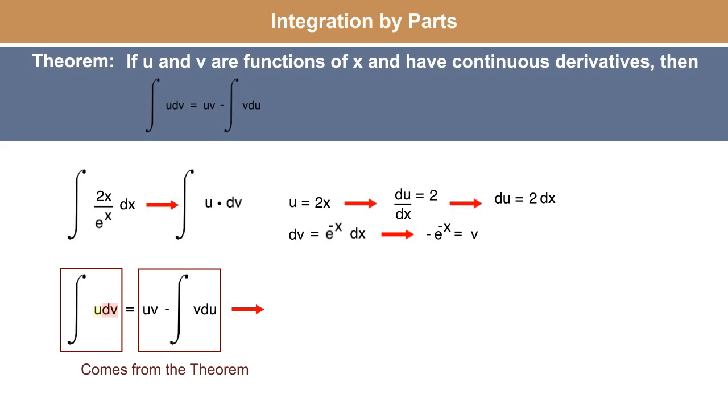We already know what u, v, and du and dv all are, so we can just plug them in and integrate from here. So u times v is going to be 2x times negative e to the negative x, minus the integral of v, which again is negative e to the negative x, times du, which is 2dx.